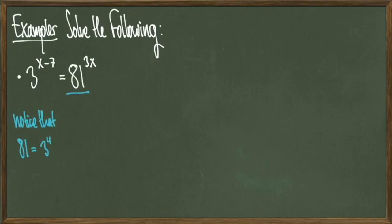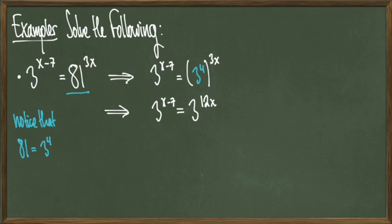So when we make this substitution, we can revise our equation to 3 to the x minus 7 equals the quantity 3 to the 4th raised to the 3x power. We simplify again to get 3 to the x minus 7 is equal to 3 to the 12x.